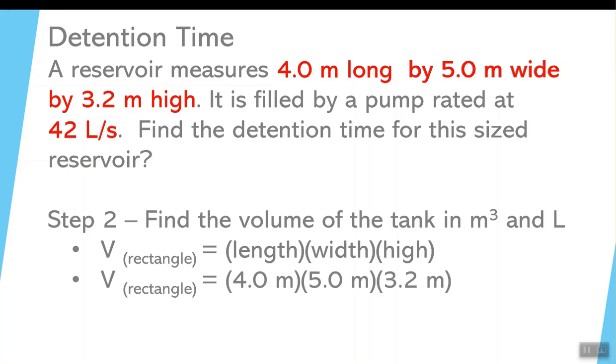Put the numbers in. 4 meters times 5 meters times 3.2 meters, and that gives you a volume of 64 meters cubed. Make sure you put the units in. A lot of people will just take 4 times 5 times 3.2, they won't put the meters in and they just assume that it's liters. But it's not.